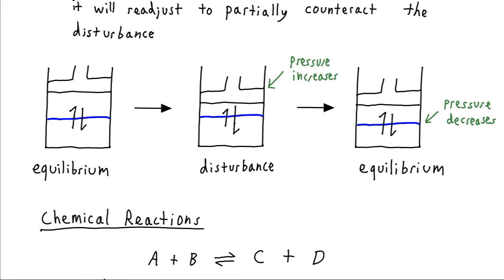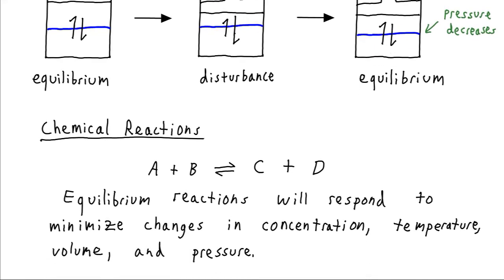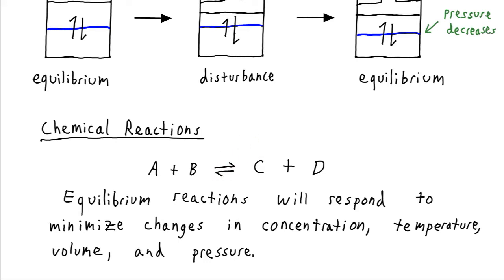For chemical reactions, we're going to consider a situation where we have equilibrium between our forward reaction and our reverse reaction — they've reached constant rates. The ways we can perturb them chemically are by changing the concentration or the temperature, or the volume or the pressure. Our response to these changes is limited to moving the reaction to the right or to the left. If we move to the right, products are favored. If we move to the left, reactants are favored.